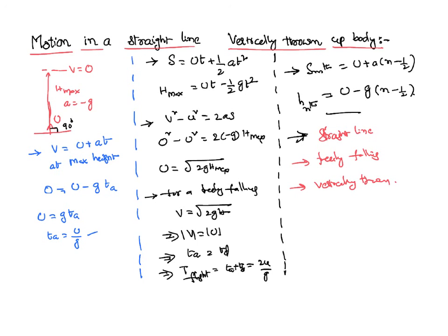Taking all these equations into consideration, we can solve multiple number of problems. Out of the given four parameters in the problem, any three will be given. We have to find out the fourth one. That way, we can solve the problems quite easily in the motion of a body along a straight line, whether it be a vertically thrown body or a freely falling body. Thank you.